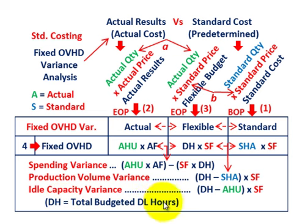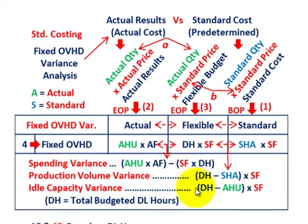Remember, DH here is the total budgeted direct labor hours that we're basing our fixed overhead cost on — the denominator hours.